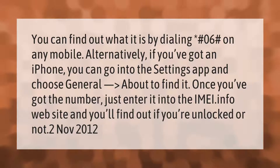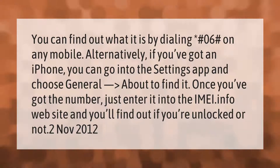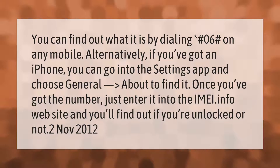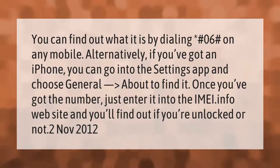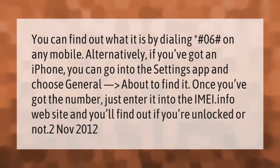You can find out your IMEI by dialing *#06# on any mobile. Alternatively, if you've got an iPhone you can go into the Settings app and choose General > About to find it. Once you've got the number, just enter it into the IMEI.info website and you'll find out if you're unlocked or not.